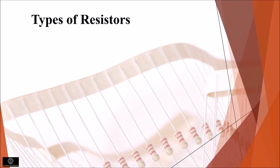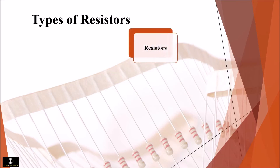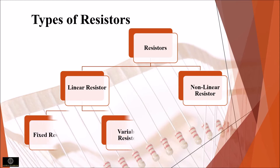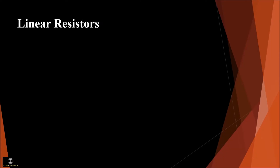Based on specifications like the power rating, type of material used, and the resistance value, the resistors are further classified. These resistor types are used for different applications. The two basic types of resistors are linear resistors and non-linear resistors. Linear resistors are further classified into fixed resistors and variable resistors. Let us go through the details of each resistor.